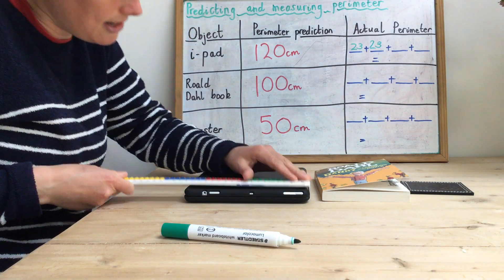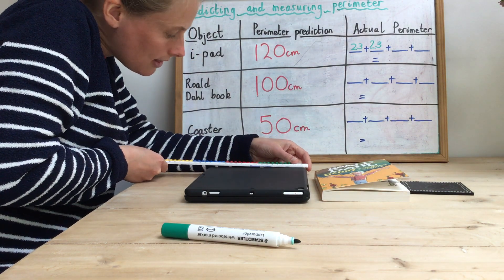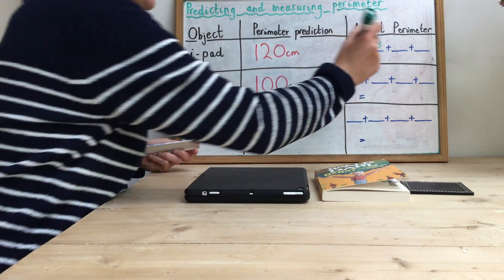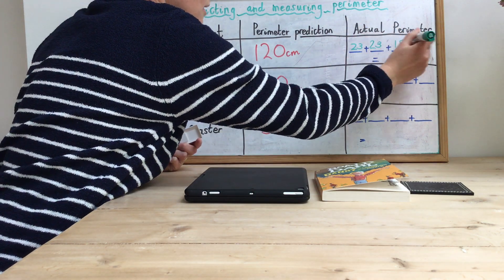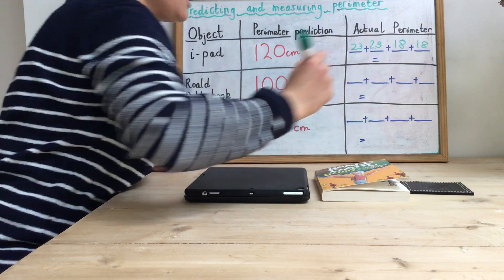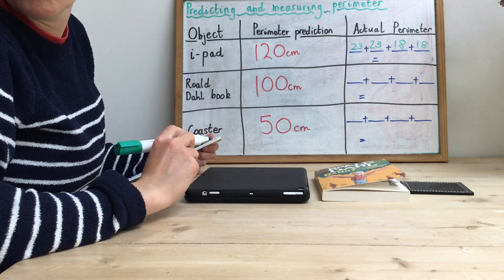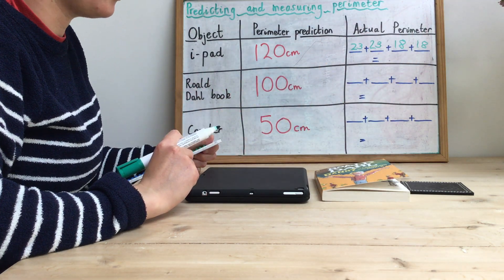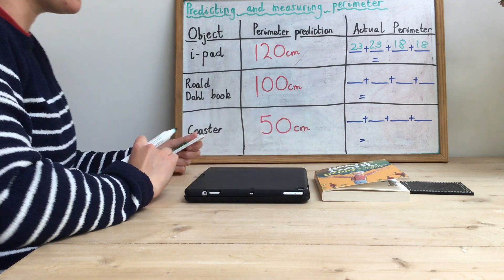And the shorter sides, I've got 18, and that also means that this side will also be 18. So I'm going to have to add those all together to show the perimeter of my iPad.